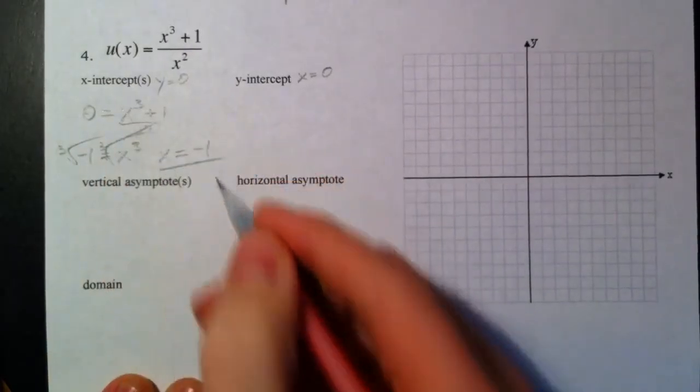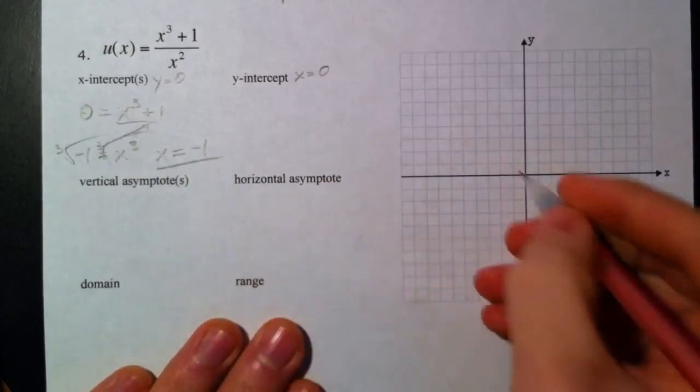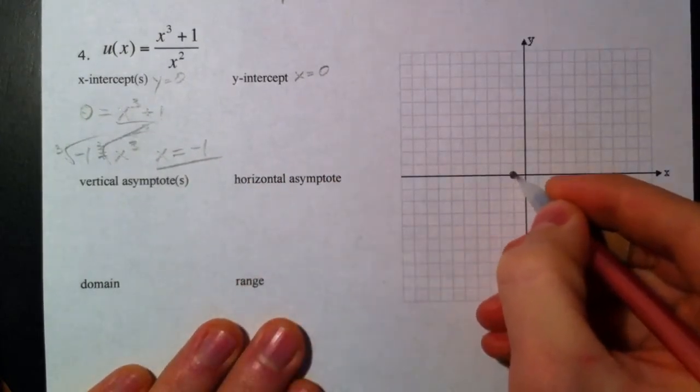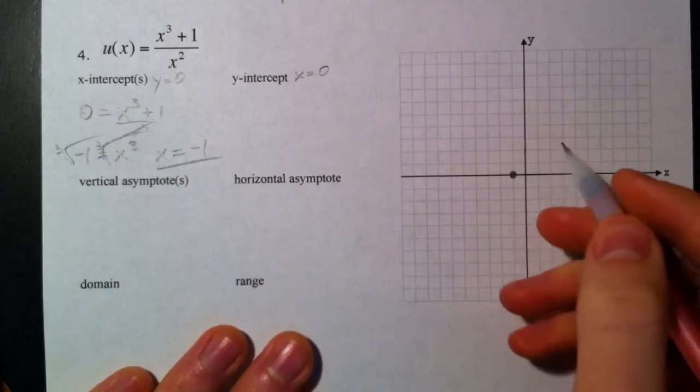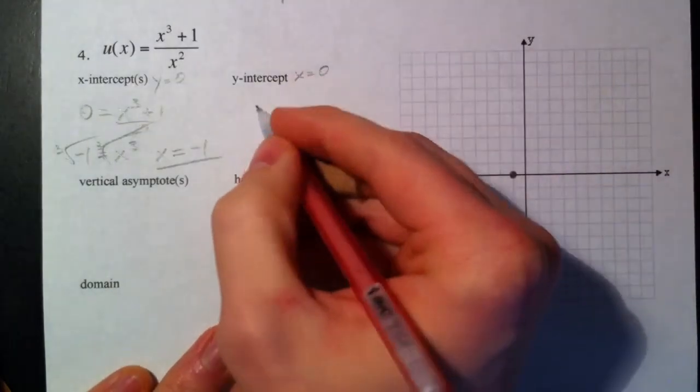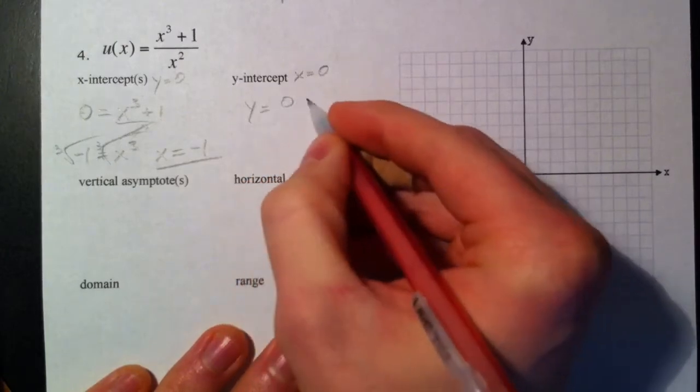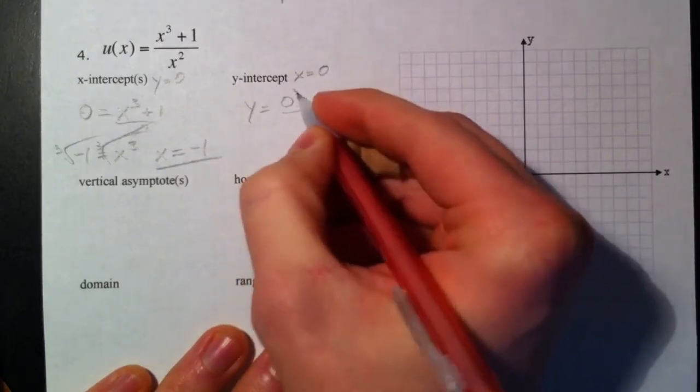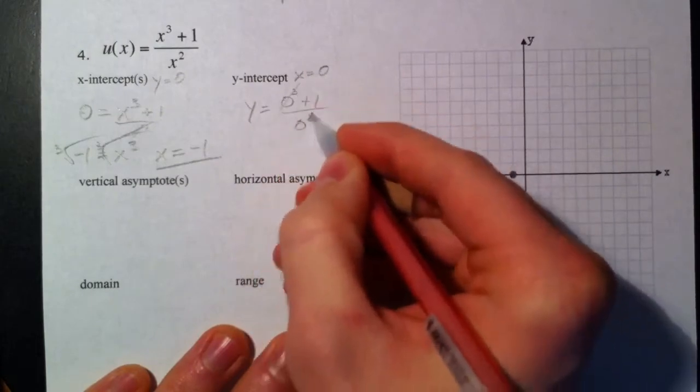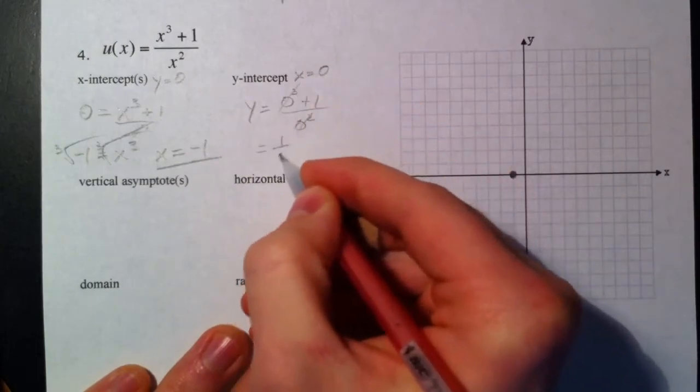So that's our x-intercept right at -1. Y-intercept: the x value equals 0, so 0 + 1, 0³ and 0² - that cancels out. We're left with 1 divided by 0.